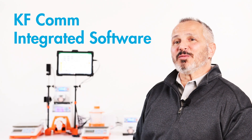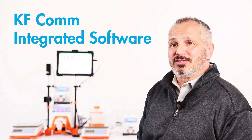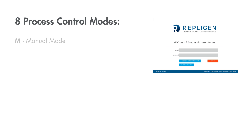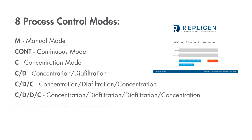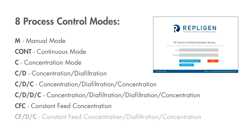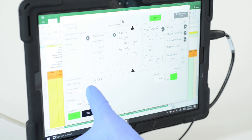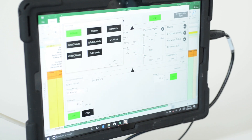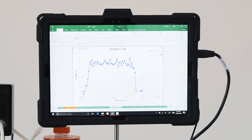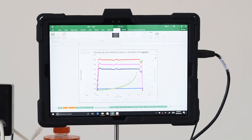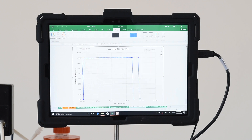KFCOM software comes with eight pre-configured methods, including manual mode. Why is that important? The methods provide reproducible use of the system — you can virtually reproduce the process over and over again. The method profile can be saved and simply recalled to quickly set up and perform an experiment. The KFCOM software gives real-time feedback and recording as minimal as every two seconds, with real-time graphs of the operation.